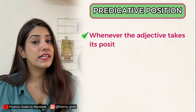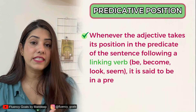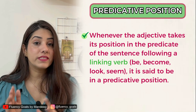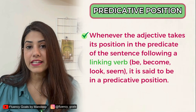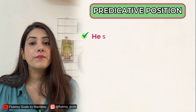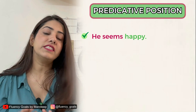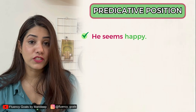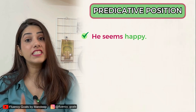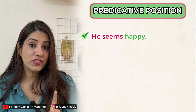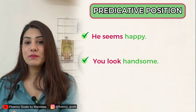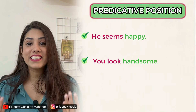Whenever the adjective takes a position in the predicate of a sentence — placed after a linking verb like be, become, look, seem — the adjective is taking a predicative position. For example: 'He seems happy.' Here 'happy' is an adjective describing the state of 'he', and it takes its position just after the linking verb 'seems'. Many learners confuse the adjective in a predicative position with an adverb because of its position. Another example: 'You look handsome' — 'look' is a linking verb and 'handsome' is the adjective describing the state of 'you'.